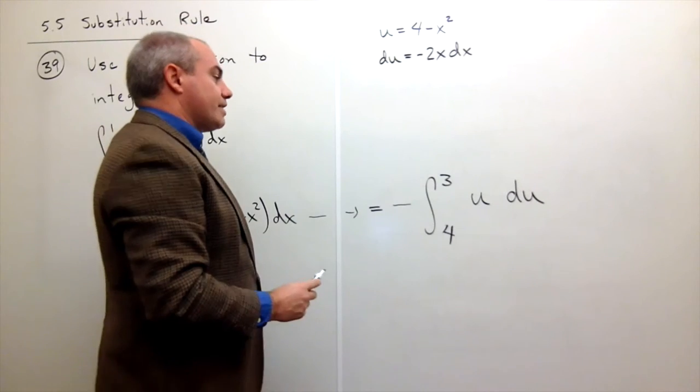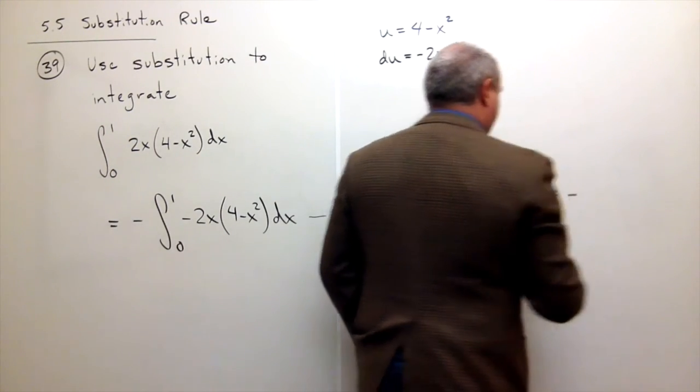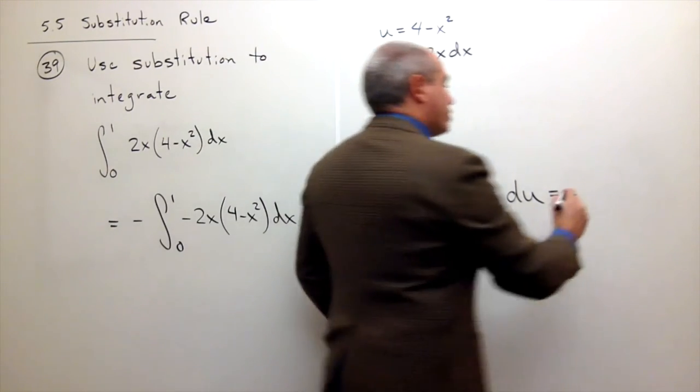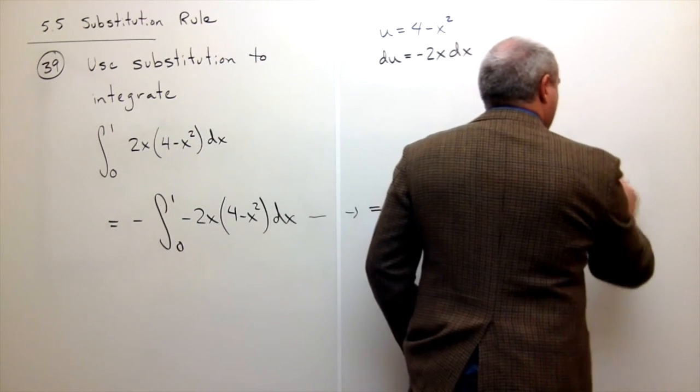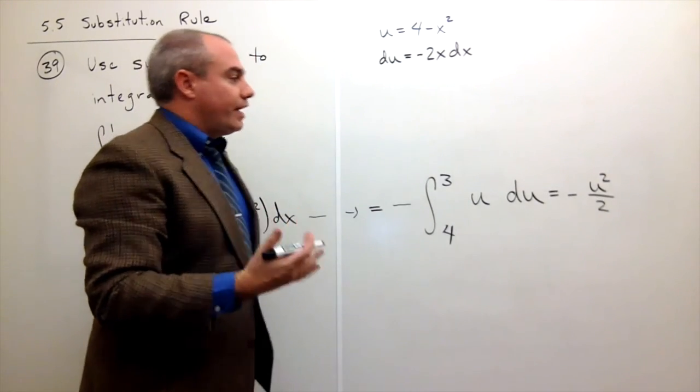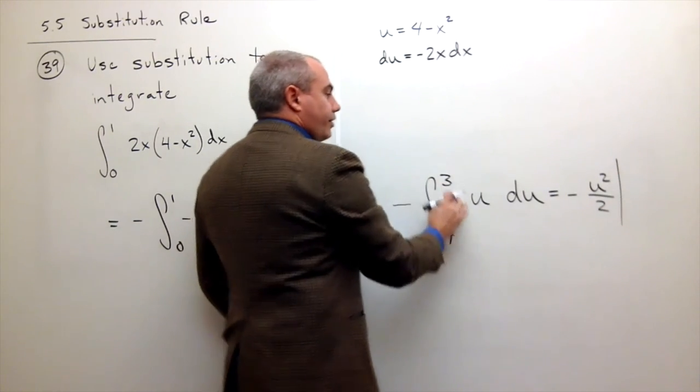So now let's take our antiderivative. So I have a negative, and then the antiderivative of u is u squared over 2. And then I can evaluate that from 4 to 3.